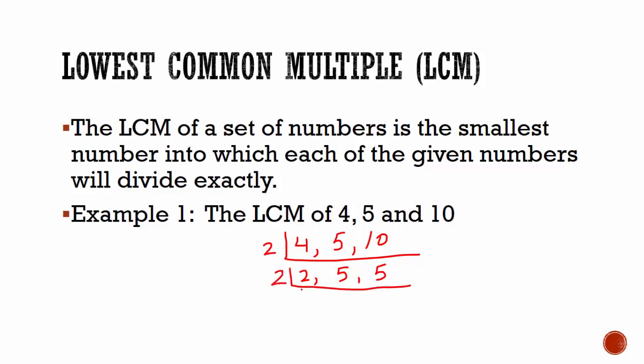Again, we divide by 2. 2 divided by 2 gives 1. 5 cannot be exactly divided by 2 so we leave, we put back 5.